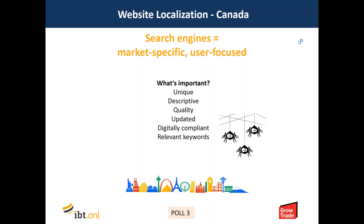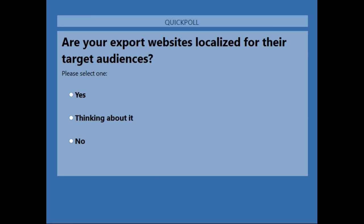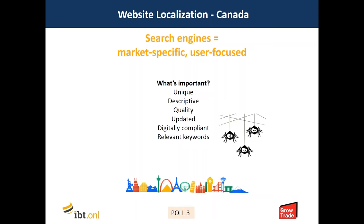Can we jump to poll number three? To follow up on that: Are your export websites localized for their target audiences? Number one, yes. Number two, thinking about it. Number three, no. Do you have websites for each country — a Canada .ca website, a U.S. website, websites for the Mexican market, the German market, et cetera? Results: 21% say yes, 42% say thinking about it, and 37% say no. Very interesting — thank you. That is poll number three, now closed. I hand back to Susanna.